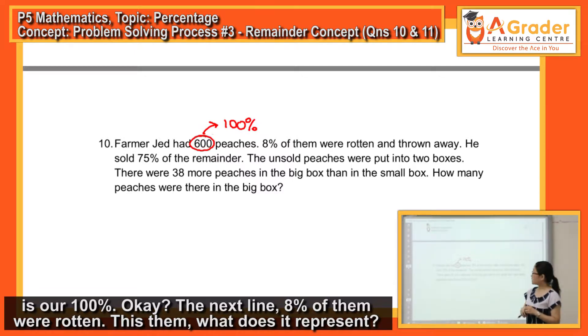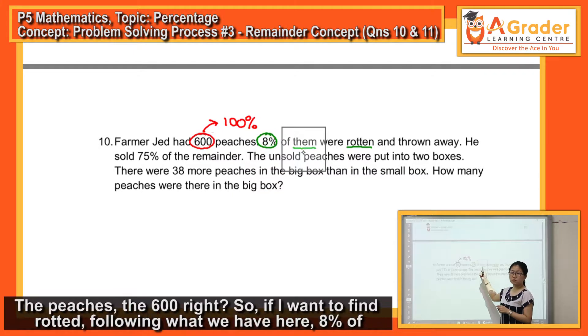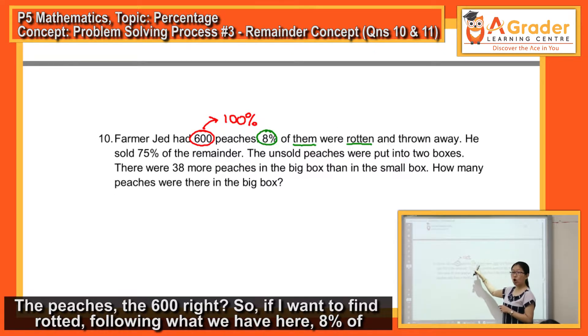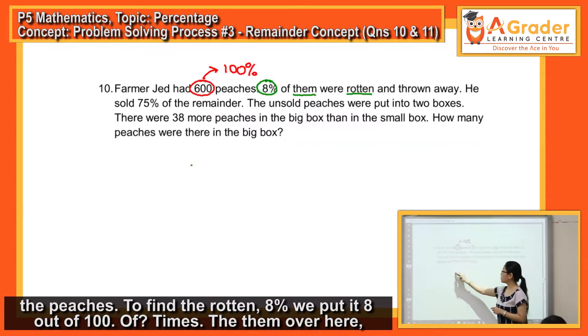Okay, the next line: 8% of them were rotten. This 'them', what does it represent? The peaches, the 600, right? So if I want to find rotten, following what we have here, 8% of the peaches to find the rotten.